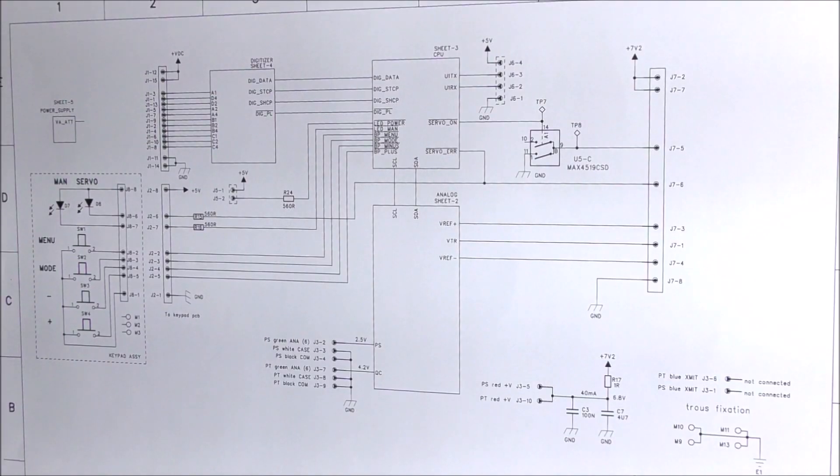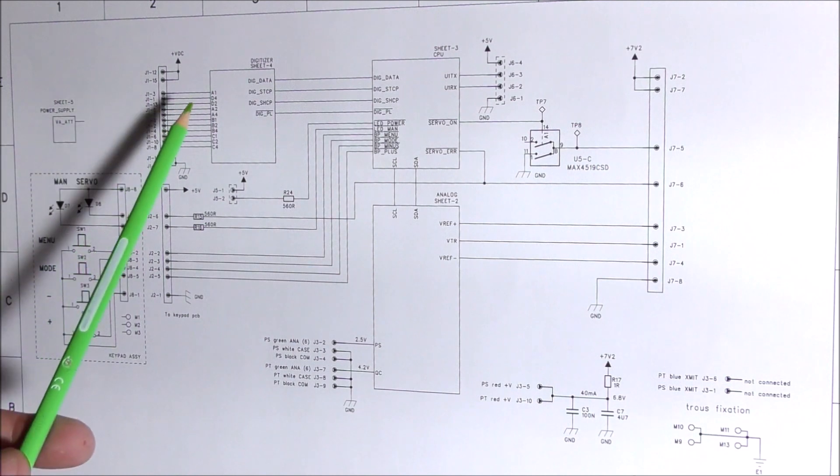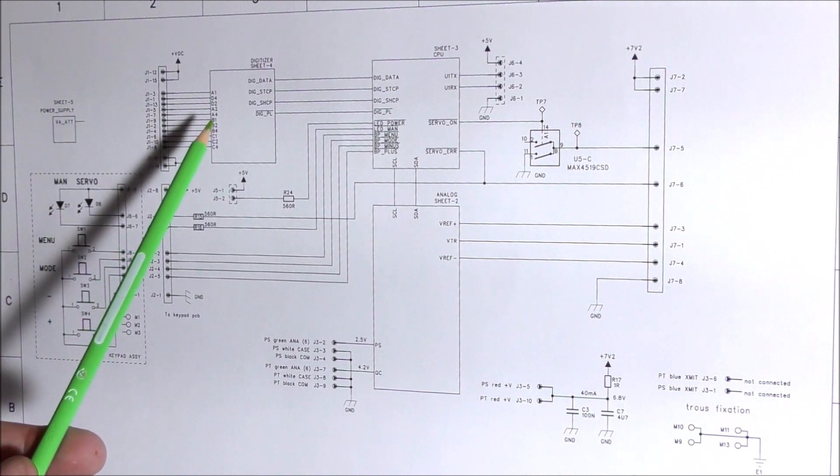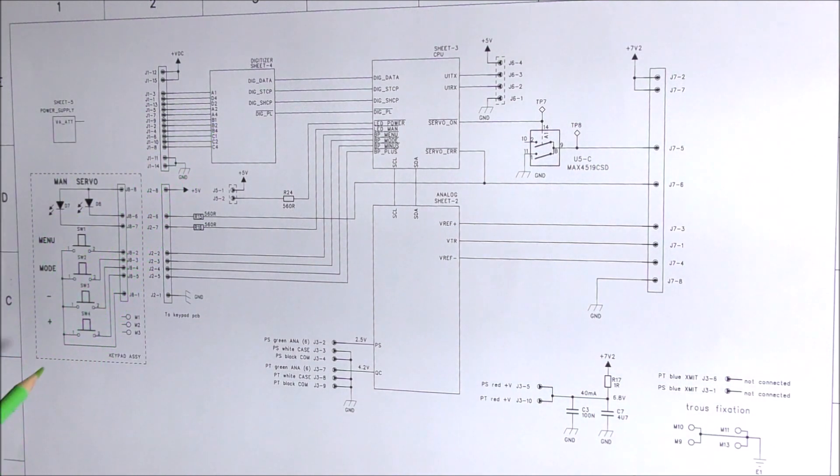On this page, there is the block schematic. Each block here corresponds to one page of the schematic. We can see here, on the left, the small keypad assembly. There is nothing special, only five push buttons and two LEDs.